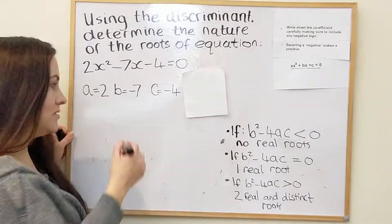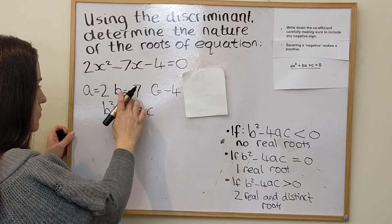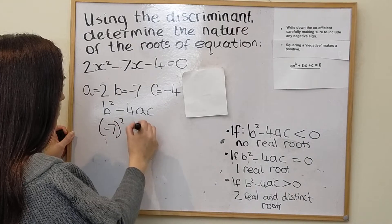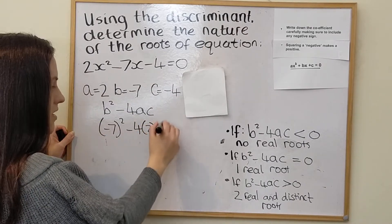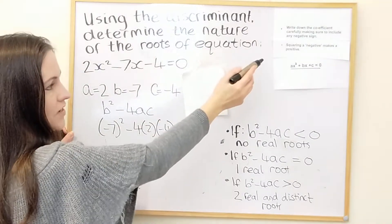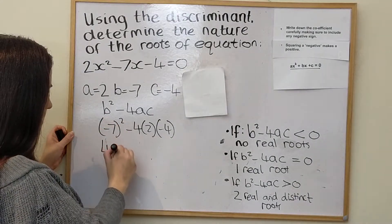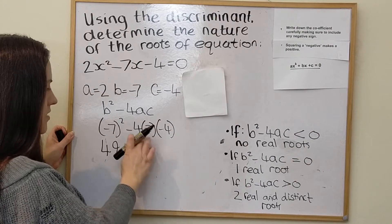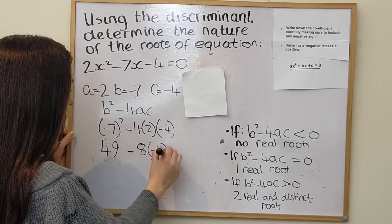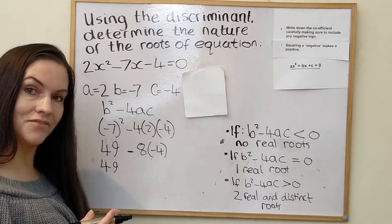We then calculate b squared minus 4ac. b is negative 7, so it's negative 7 squared, minus 4 times 2, and then times minus 4 because c is minus 4. Squaring a negative makes a positive — a lot of people forget that — so negative 7 squared is 49. We take away 4 times 2 which is 8, and multiply by negative 4. Negative 8 times negative 4 becomes positive 32.